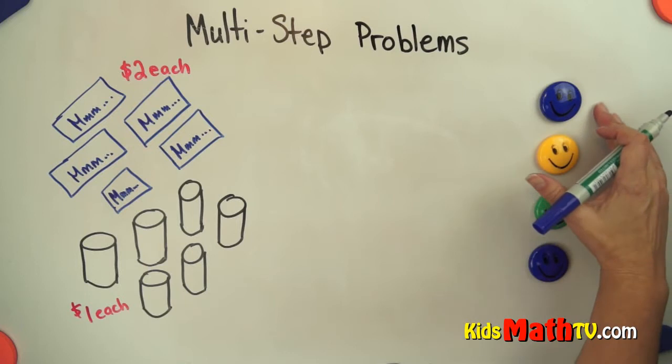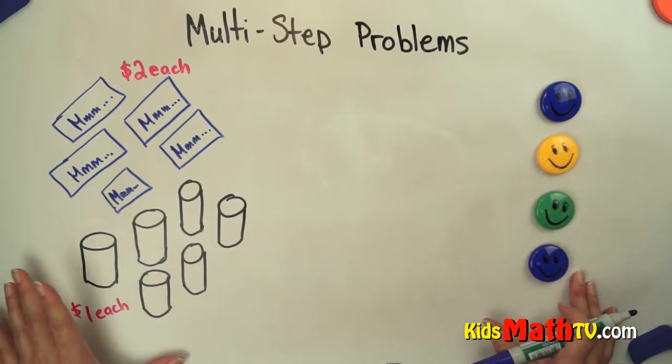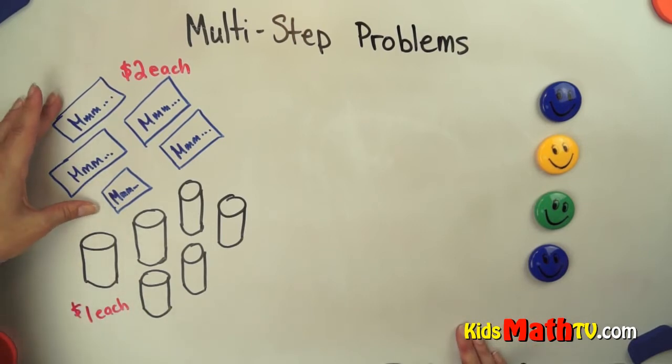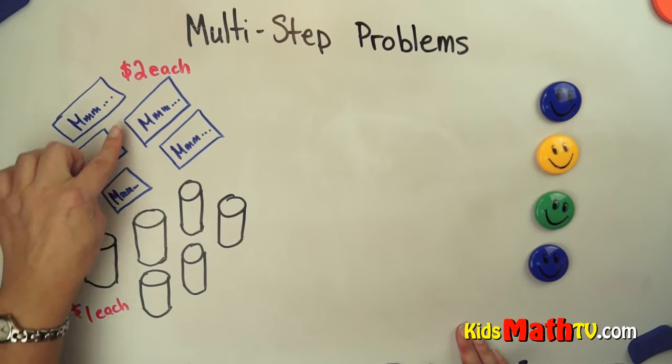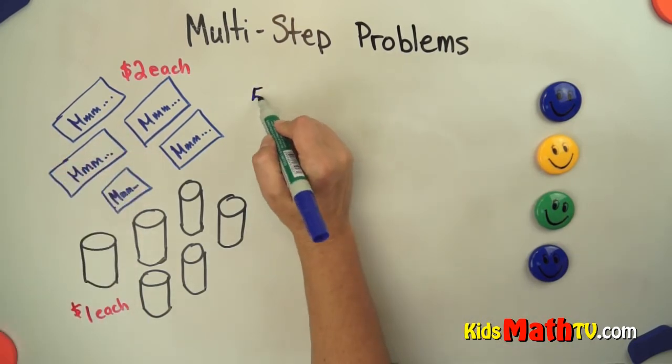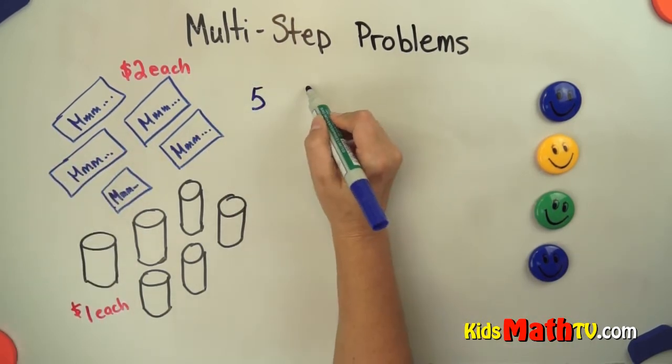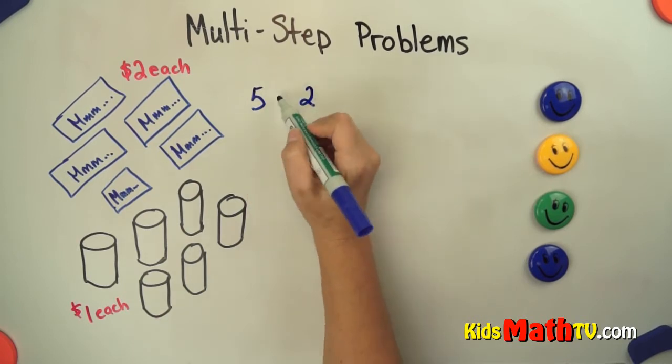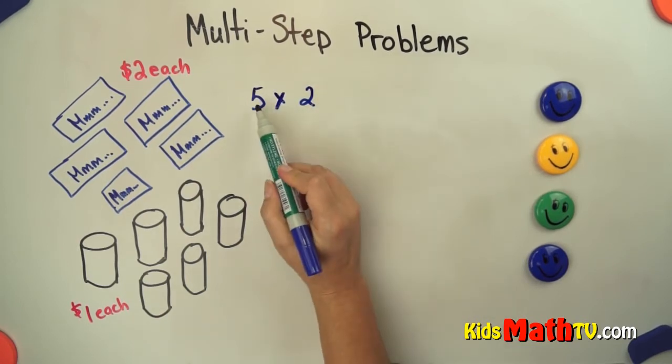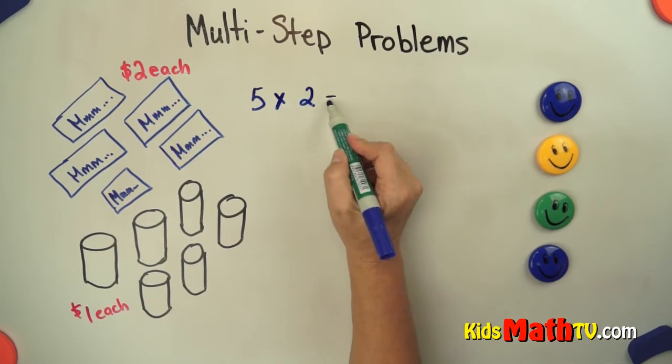We're going to break it into parts. First, we're going to find the cost of these candy bars. There are one, two, three, four, five candy bars, and they each cost $2. So we can use the operation of multiplication. 5 times 2 is 10. So the candy bars cost $10.